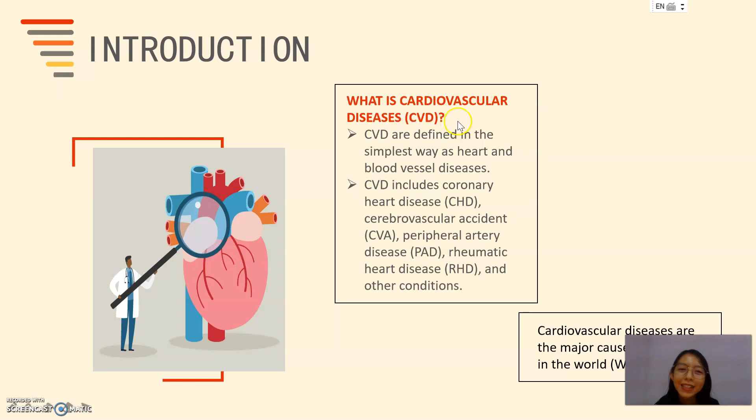So what is cardiovascular disease? CVD are defined in the simplest way as heart and blood vessel disease. CVD include coronary heart disease (CHD), cerebrovascular accident (CVA), peripheral artery disease (PAD), rheumatic heart disease (RHD), and other conditions.